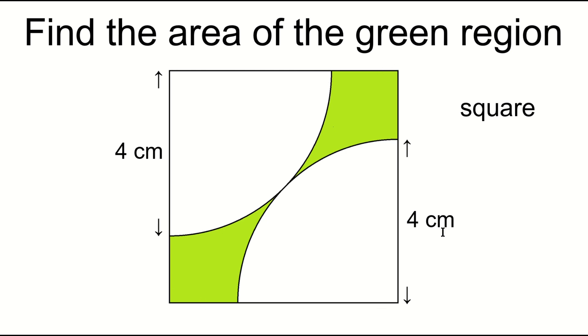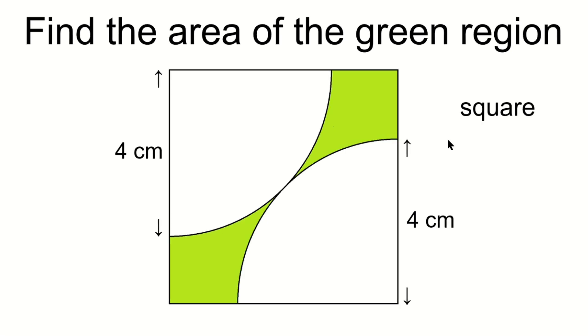Now, we know the radius of the quarter circle is 4 centimeters, so we know the area of the quarter circle. So how do we calculate the area of the square? We'll think about this in the next slide. First of all, please subscribe to my channel before solving the problem.